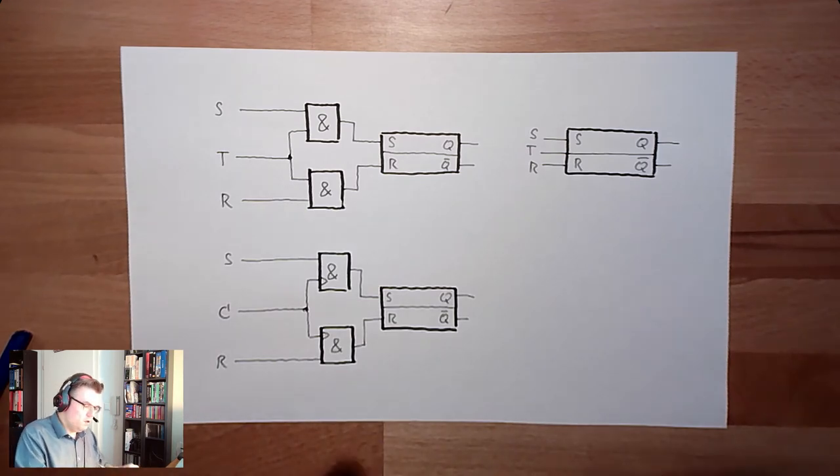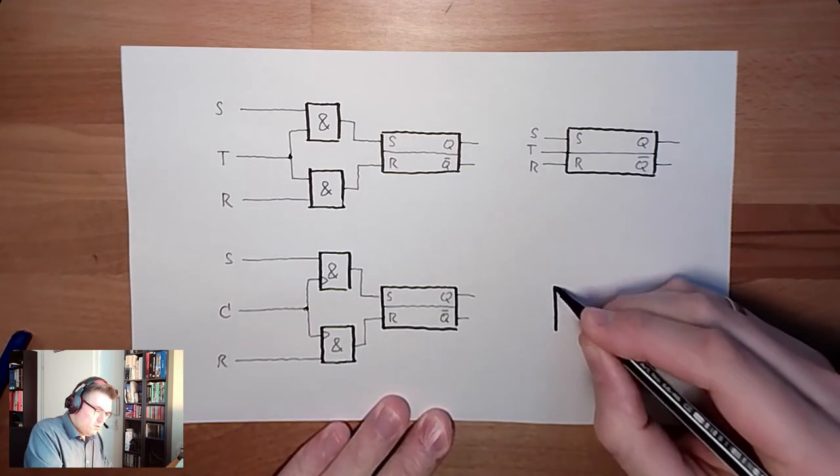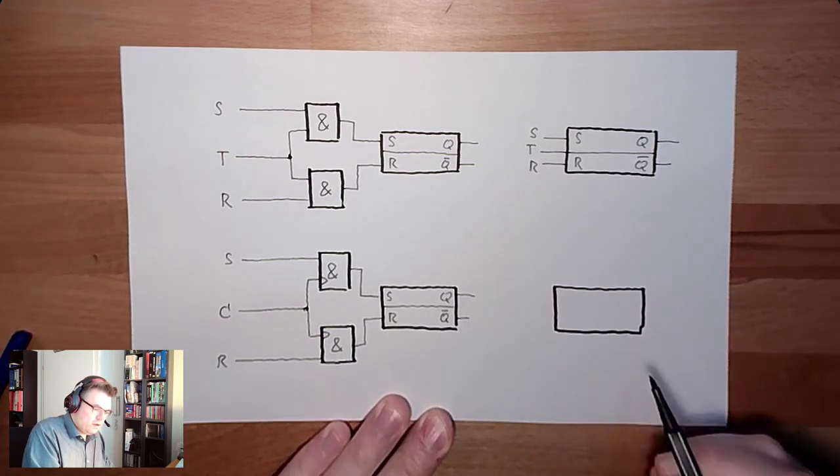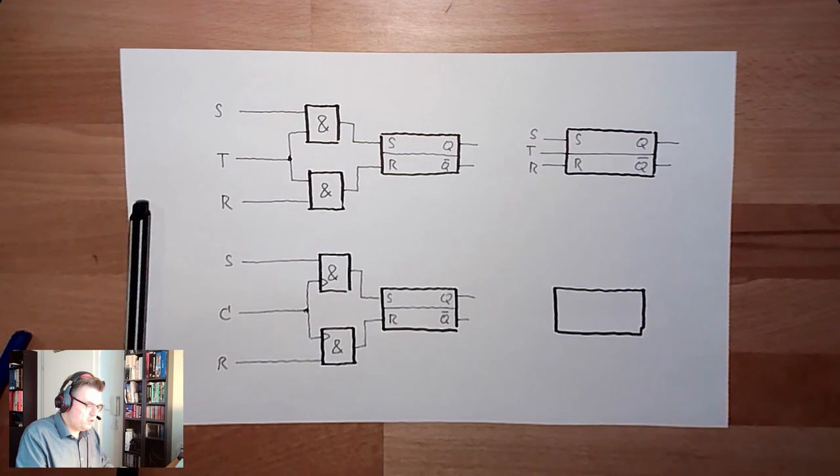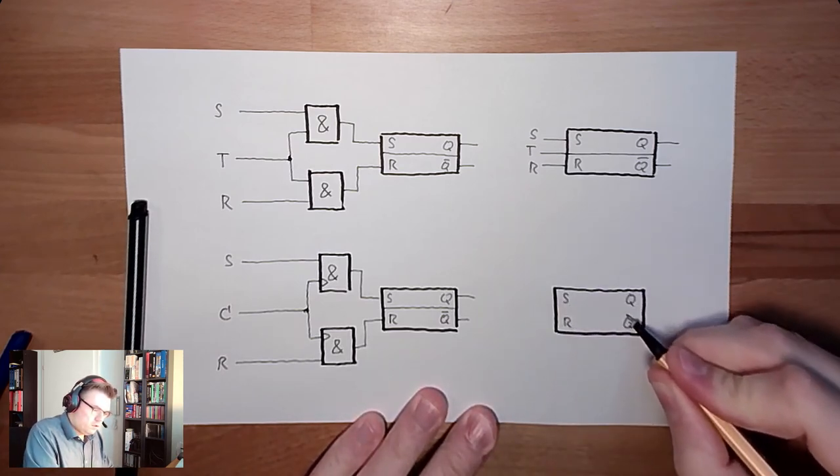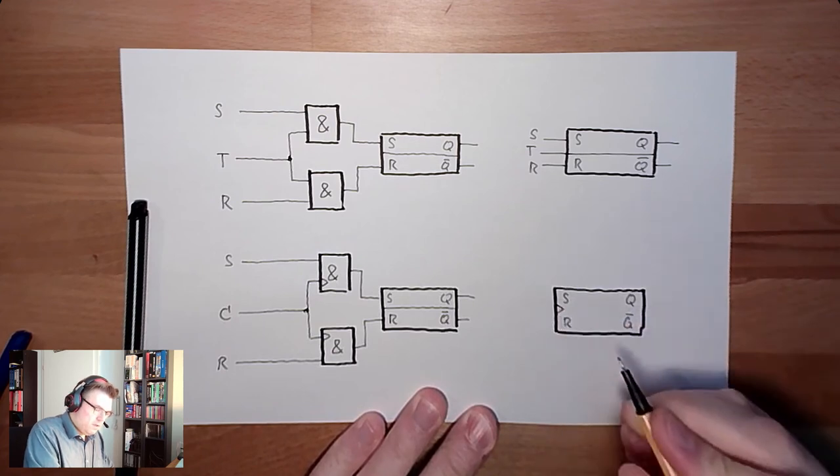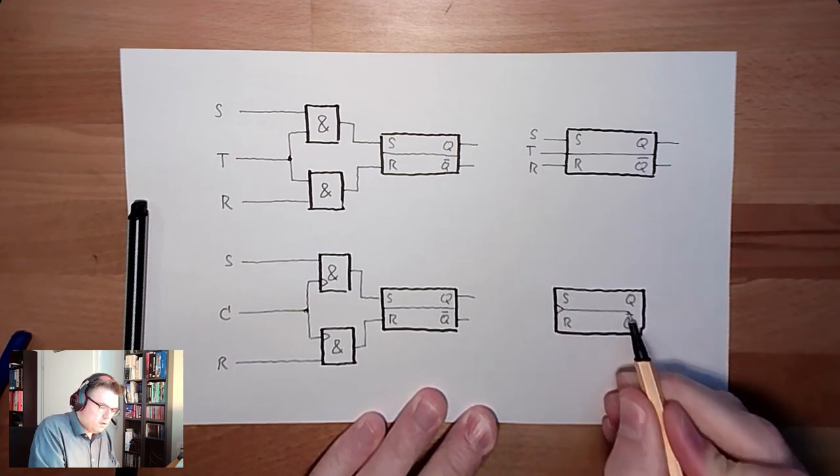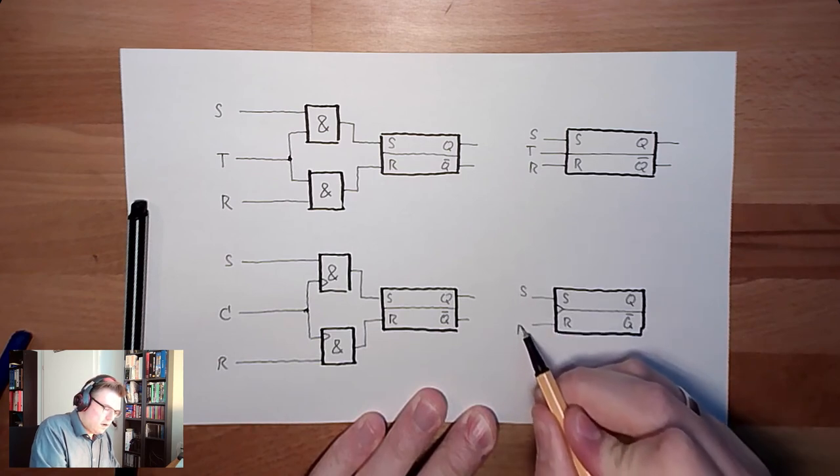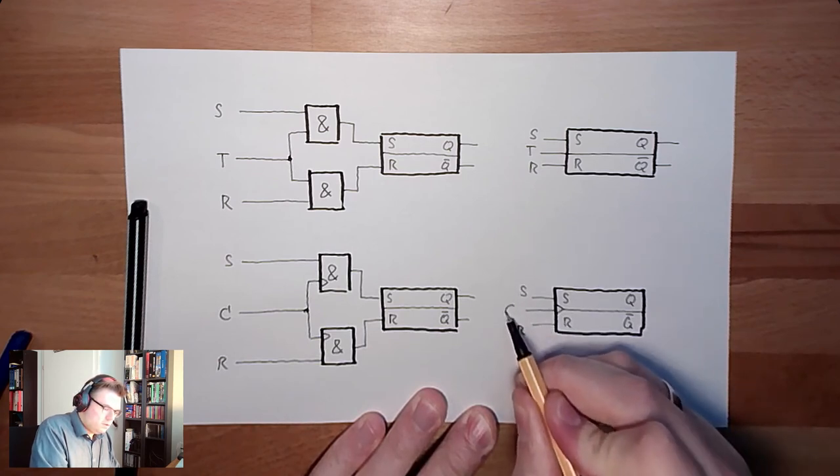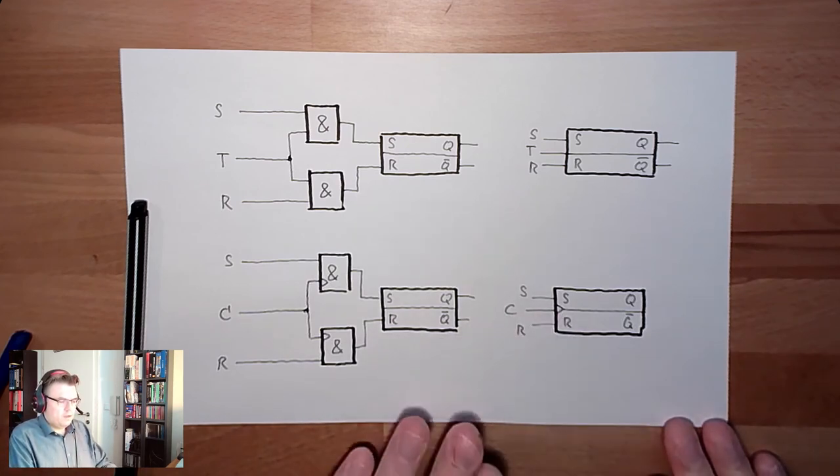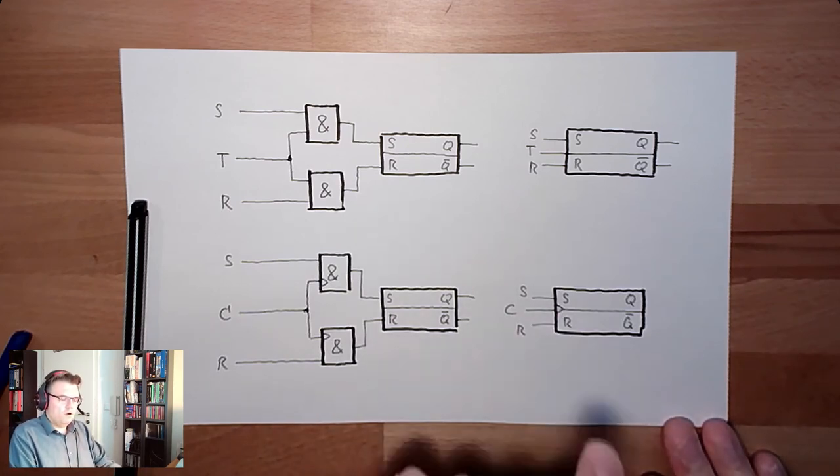The symbol of such latch looks like this. So this is an edge-triggered latch. Edge-triggered because the edge of C is triggering the writing to the latch. And there is dynamic input. The middle one is dynamic. Here is the S line, here is the R line, and here is the C. Edge-level triggered on rising edge.